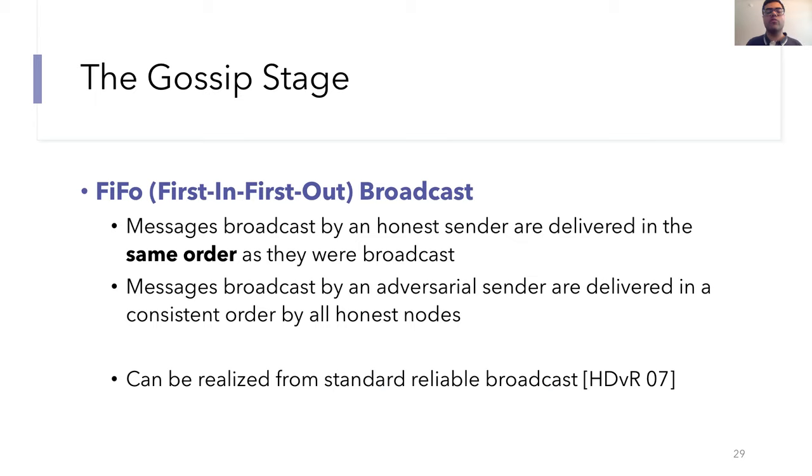To accomplish this, we use the FIFO or first-in, first-out broadcast primitive. In a FIFO broadcast protocol, there's a single defined sender that sends a series of messages to all of the other nodes. So FIFO broadcast guarantees that if the sender is honest, then its broadcast will be delivered in the same order as they were initially broadcast. Even if the sender is malicious, its broadcast will be delivered in a consistent order. So all of the nodes should deliver them in the same order as each other, but this may not be the same order as they were initially broadcast by the adversarial sender. Prior work has shown how to realize FIFO broadcast just from standard reliable broadcast.